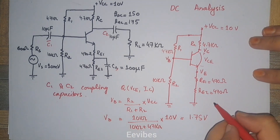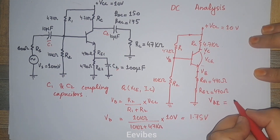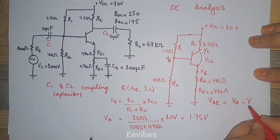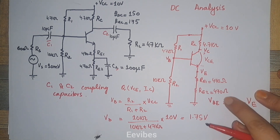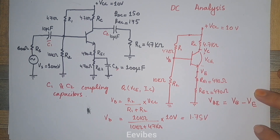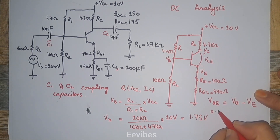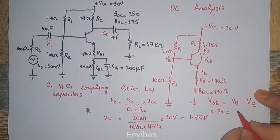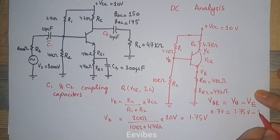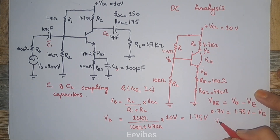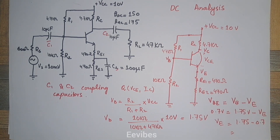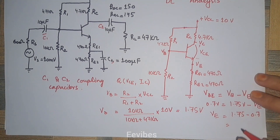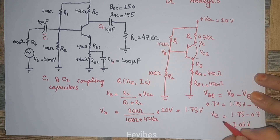Simplifying gives VB equal to 1.75 volts. Next, VBE is the voltage at the base with respect to ground minus the voltage at the emitter with respect to ground. We know VBE equals 0.7 volts, so: 0.7 = 1.75 minus VE. Rearranging gives VE equal to 1.75 minus 0.7, which is 1.05 volts.